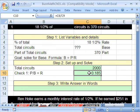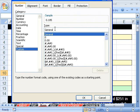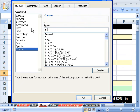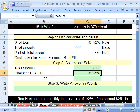I'm going to format this. Control-1, custom, and as we saw just a moment ago, pound, space, question mark slash question mark, and then percent. Wow, that is like magic.